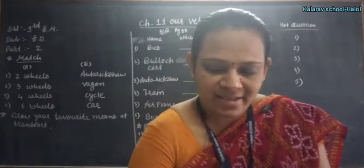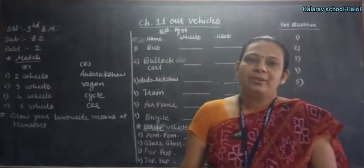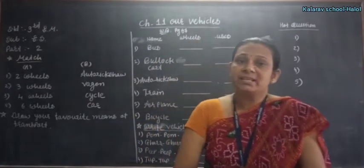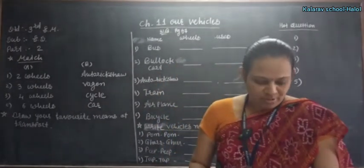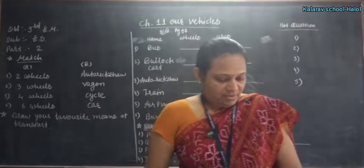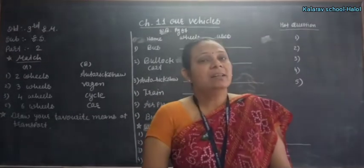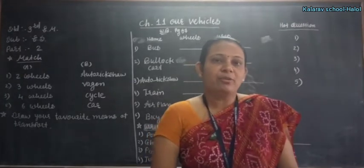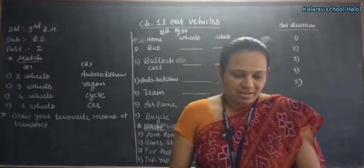Hello students, how are you? Fine? Okay, now we are going to continue explanation of chapter number 11, Our Vehicles. Now one girl is going to Kerala in her nanny's house, and they want to take the boat as a vehicle.